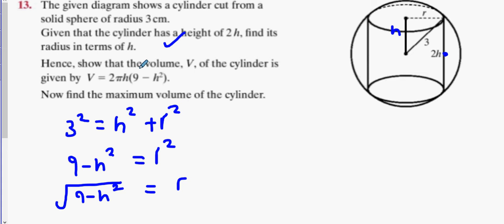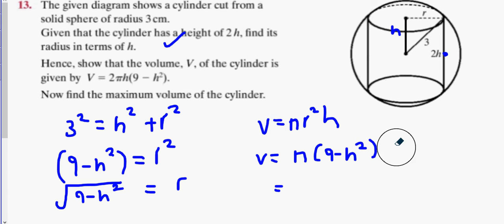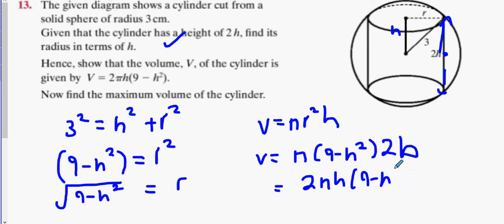Now show that the volume V of the cylinder is this. Volume of a cylinder is pi r squared h. So the volume is pi times (9 minus h squared) times h. I made a mistake — the height is actually not h, it's 2h because that's what the question states. So we get 2 pi h times (9 minus h squared).